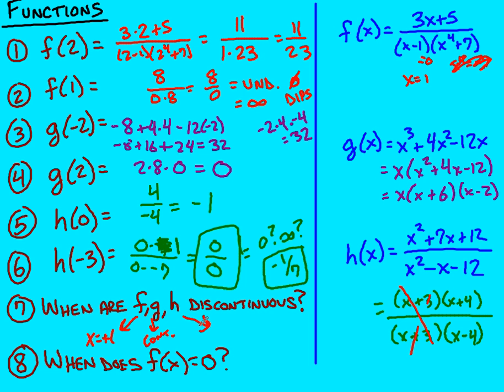Now for h. When is h discontinuous? Same thing. When does the bottom equal zero? That's when x equals negative three, and when x equals positive four, because that's when my denominators equal zero.